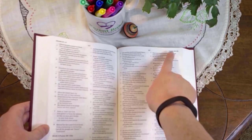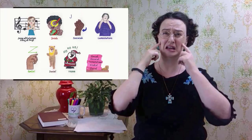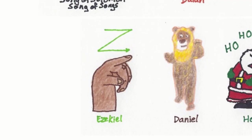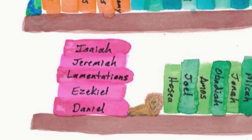Ready? Attention. Present Bibles. Daniel. Start. This memory device backs up and adds in Song of Songs, or Song of Solomon, or Canticles, so that we remember what comes before. Song of Solomon, Isaiah, Jeremiah, Lamentations, Ezekiel, Daniel. Remember Daniel in the lion's den? Hosea comes next. These are the books of the major prophets.